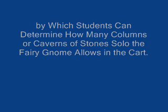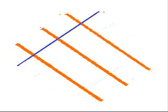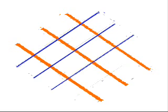To represent the divisor, draw three diagonal lines. Then, to determine how many columns of stones can be placed in the cart while making the crossing lines, count by three until you reach the dividend.